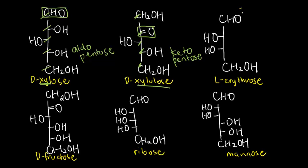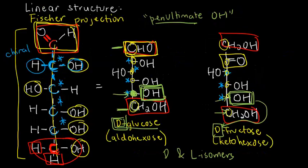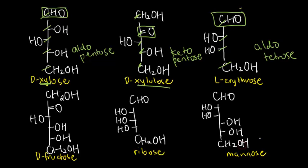L-erythrose. Aldehyde. So, aldo. Then the number of carbons. 1, 2, 3, 4. So, it's an aldotetrose. D-fructose, actually, luckily, has already been answered a while ago. So, it's a ketohexose. I mean, even if you check it here, it would be a ketohexose. Ribose here, let's see. It's an aldehyde. CHO. So, aldo. Then the carbons are 1, 2, 3, 4, 5. So, it's an aldopentose.